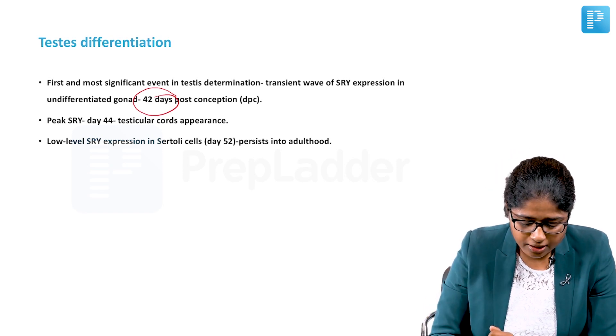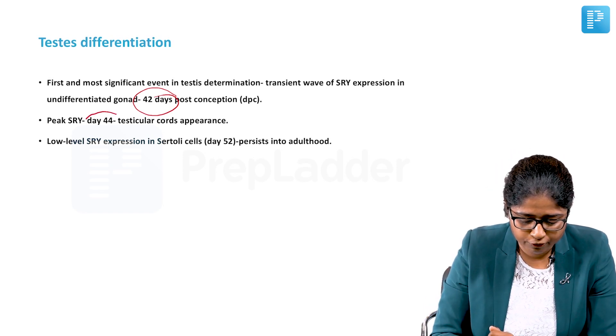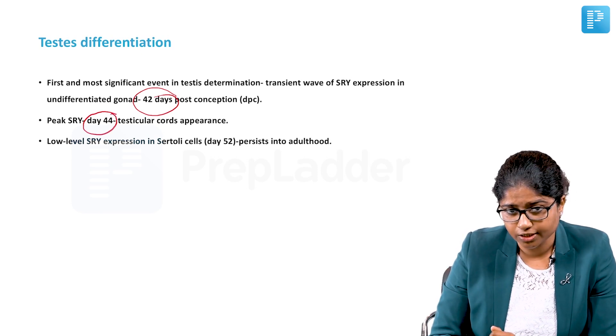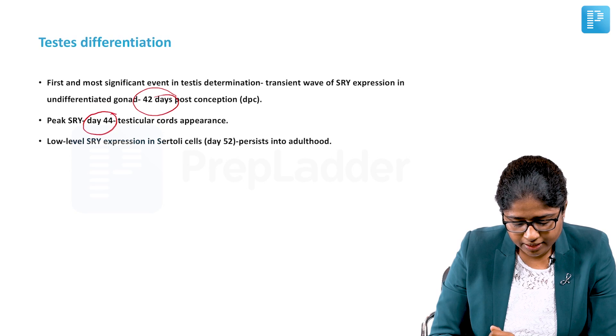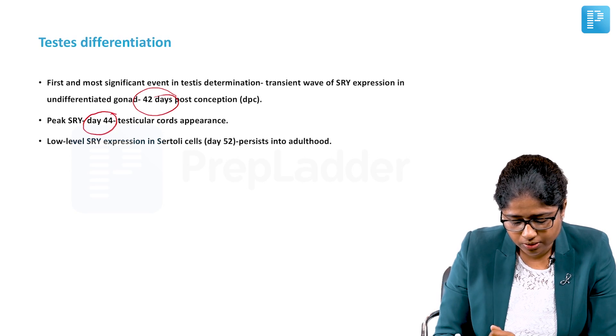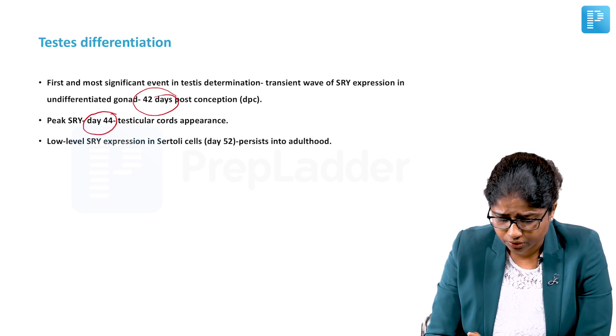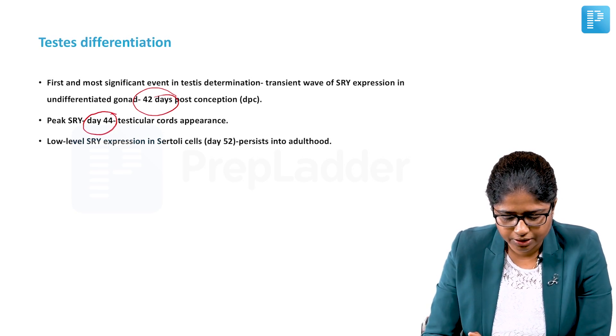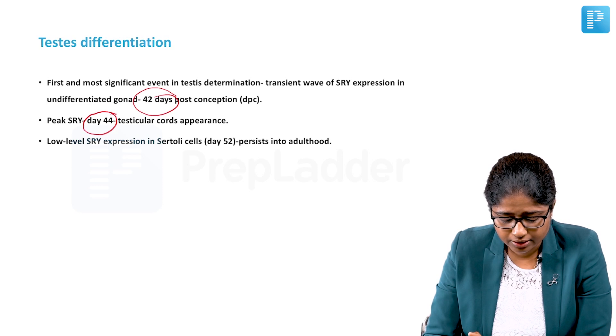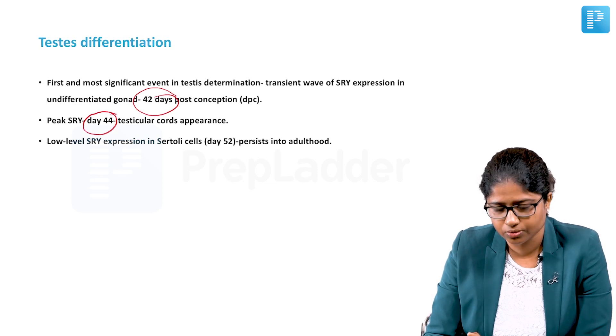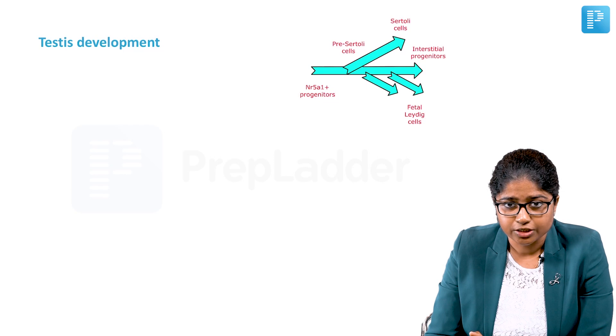The peak SRY expression happens on day 44, at which testicular cords start to appear. Low-level SRY expression is seen in Sertoli cells from day 52 onwards and persists into adulthood. Usually the production starts to wane, but low-level expression can be seen in the Sertoli cells right into adulthood.